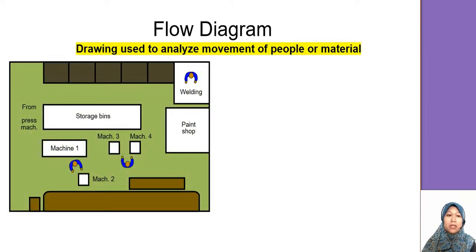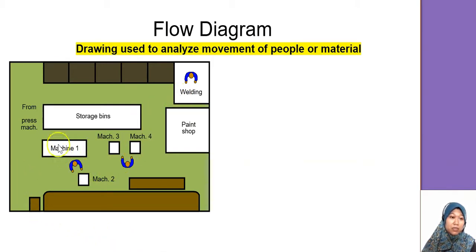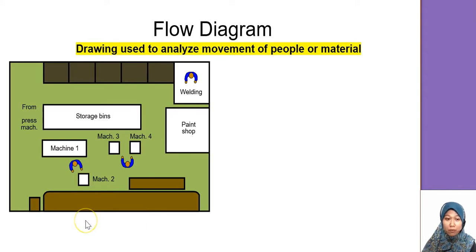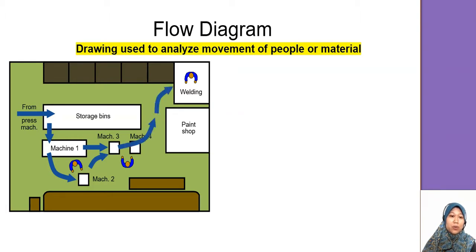The flow diagram is a drawing used to analyze the movement of people, materials, or both. In this example, three workers are involved with workstations: machine one, two, three, four, a storage bin, and a paint shop. This shows the 'before' state — the flow goes from storage bin to machine one, machine two, machine three, machine four, and directly to welding.